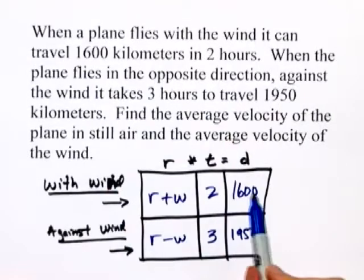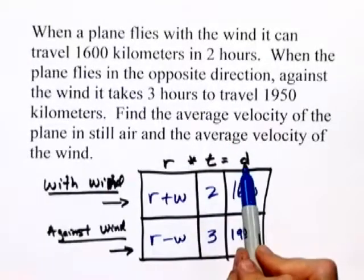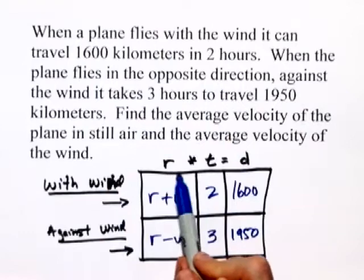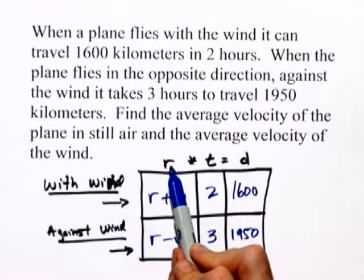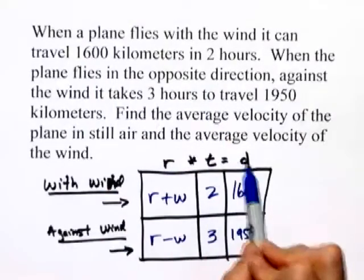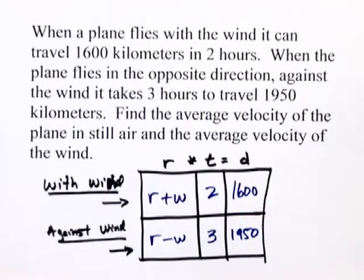So, from this table, we can see our two equations by the formula d equals rt. Well, in this case, r, or velocity, times t, the time equals distance. Let's take a clean sheet of paper and put our two formulas down and solve for r and w by making a system of equations.